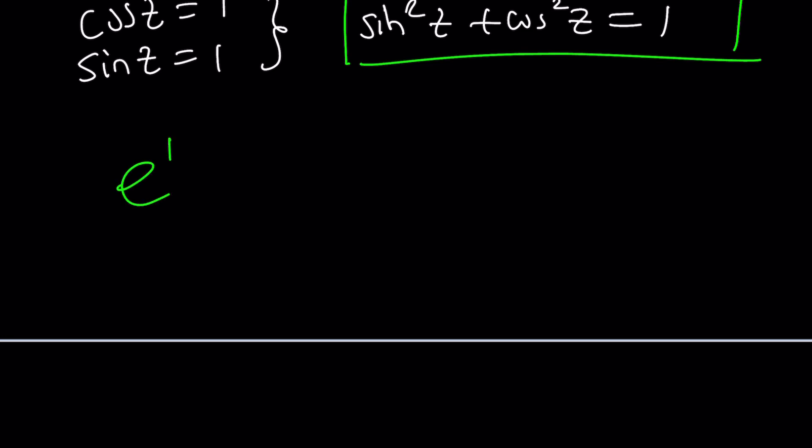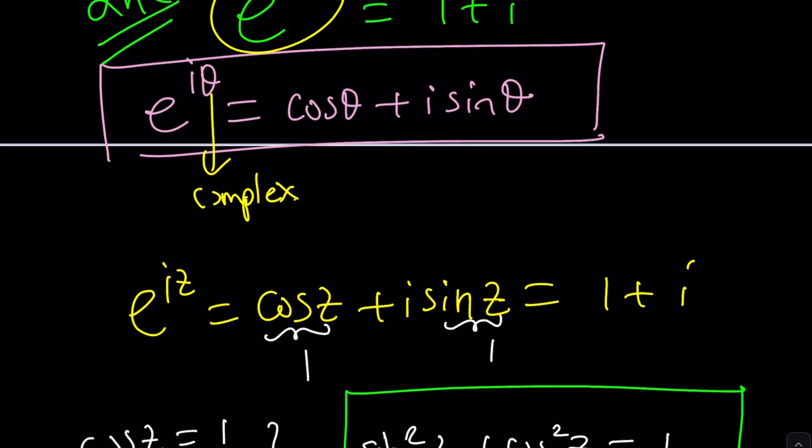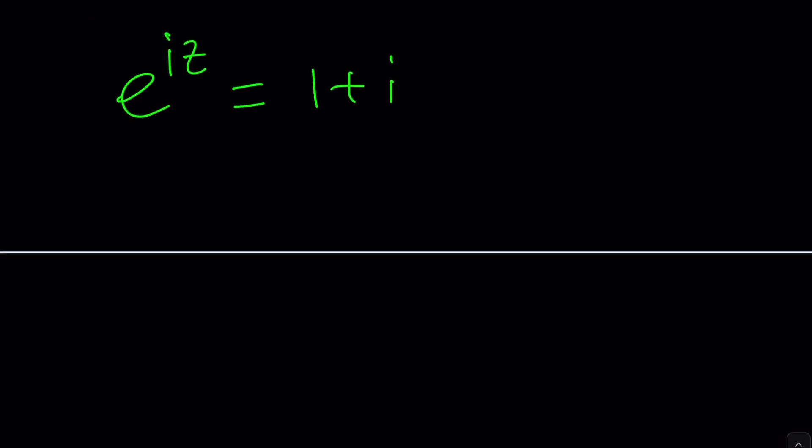Here's the second method. e to the iz equals 1 plus i. So I just showed you a method that doesn't work. You have to be very careful with complex numbers. It's a slippery slope. So now we're going to do the following. Turn this into polar form. We already talked about it.